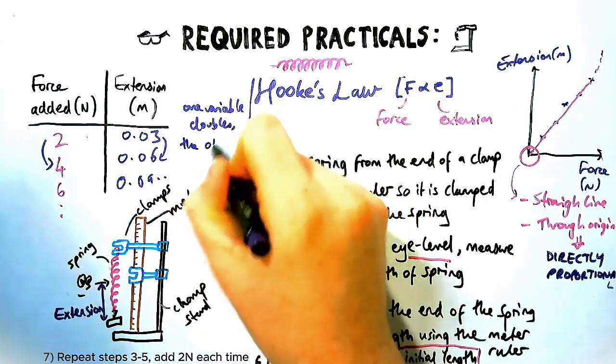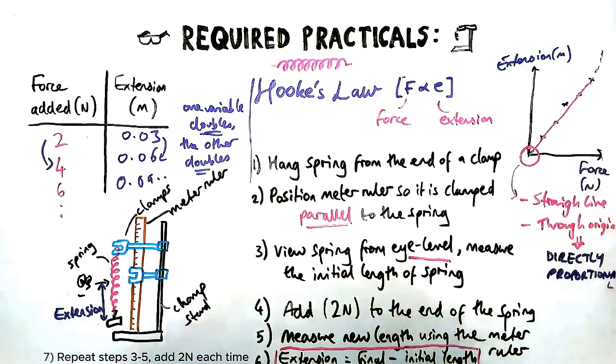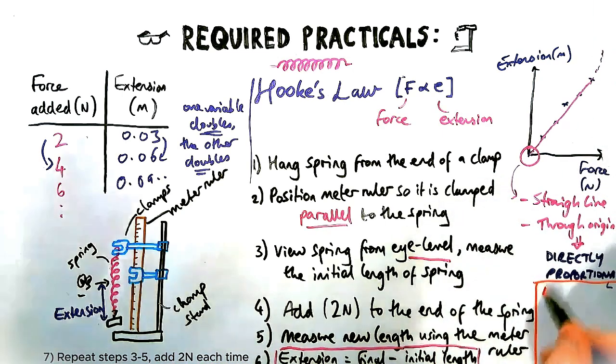Now, we can also tell it's directly proportional from the table, which is as one variable doubles, two to four, the other variable also doubles from 0.03 to 0.06.